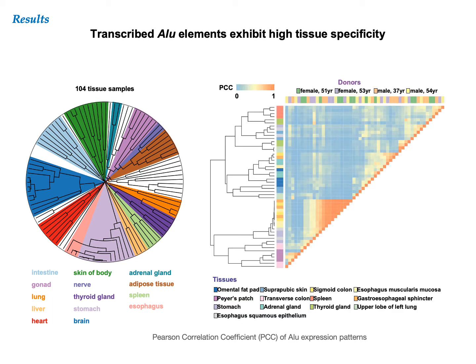A subset of the tissue samples were donated by four individuals, and we performed hierarchical clustering on just these samples, and the results are shown in this heat map. The orange patches along the diagonal indicate that samples of the same tissue tend to cluster together. Specifically, the Pearson correlation coefficients among samples in the same tissue but from different donors were four times higher than the coefficients among the samples of the same donor but different tissues.